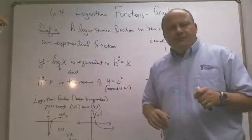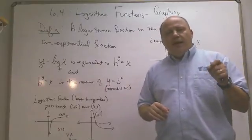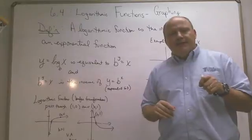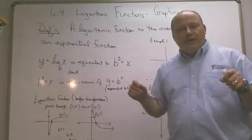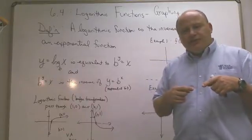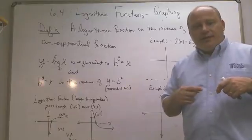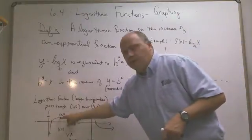Now, remember back in exponential functions, (0, 1) and (1, the base) are the points on the graph of an exponential function. Well, since they're inverses, that gets switched around. So instead of (0, 1) working for any logarithmic, it's going to be (1, 0) and (b, 1).